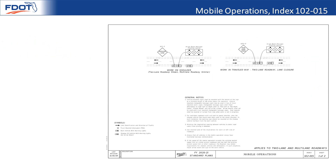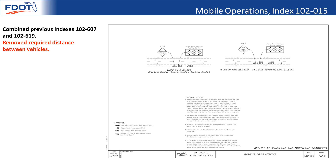Index 102-015, mobile operations, is a combination of indexes 102-607 and 102-619. One of the bigger changes beyond the combination is that the required distance between vehicles has been removed. This is to prevent concerns that may arise from spacing being too large or too small depending on the scenario — that will be left up to the operators based on the conditions they encounter. The notes have been revised to reflect that.